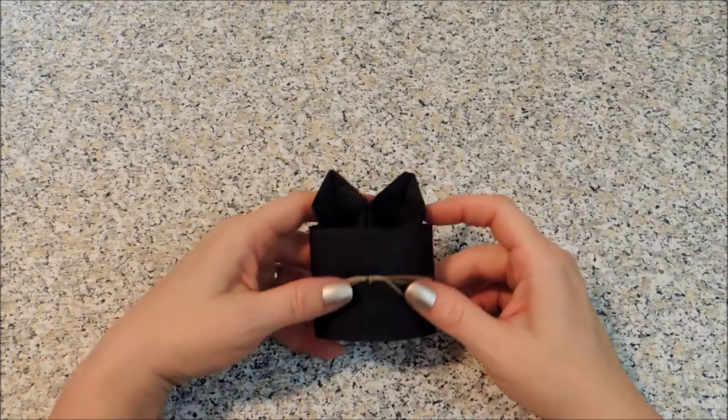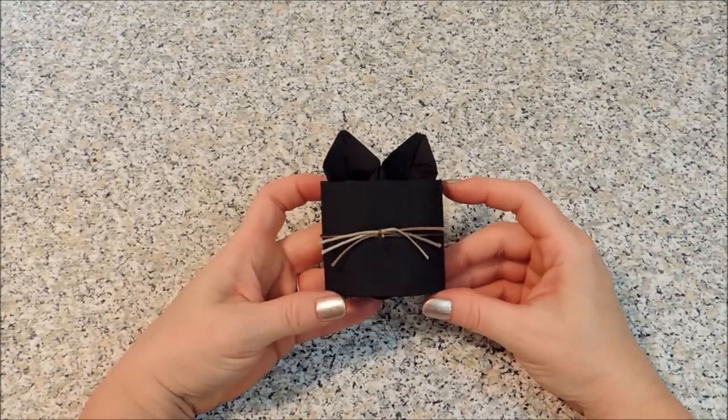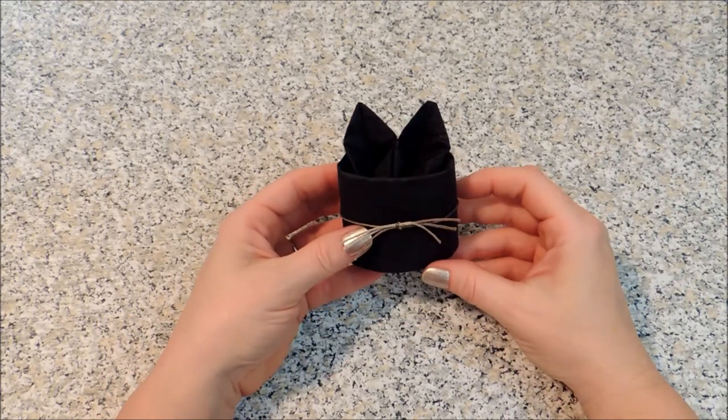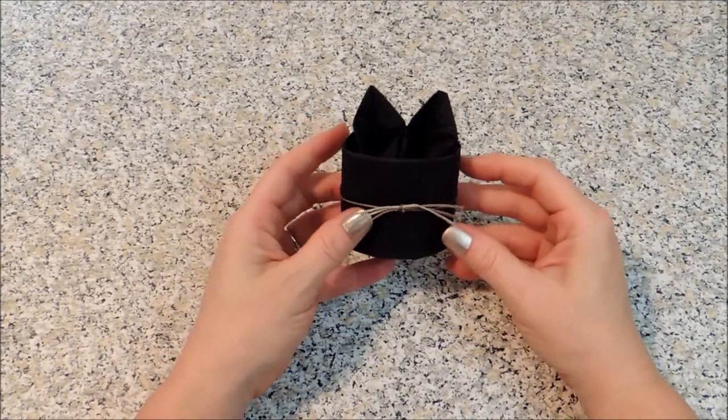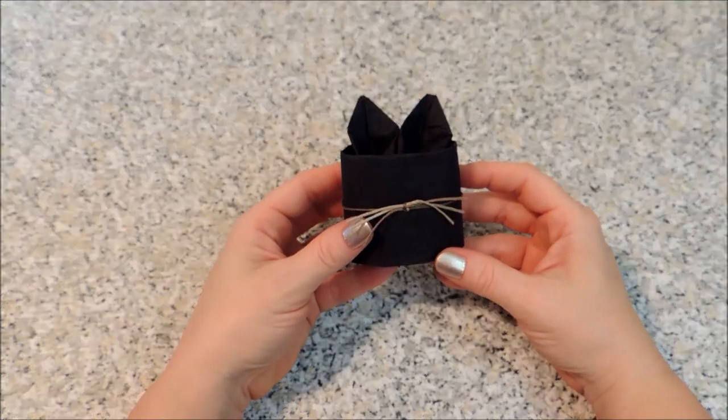You just want to make sure you've got it short like kitty cat ears instead of bunny ears. And then that can sort of stand up at your place setting, and you've got a black cat napkin fold for Halloween.